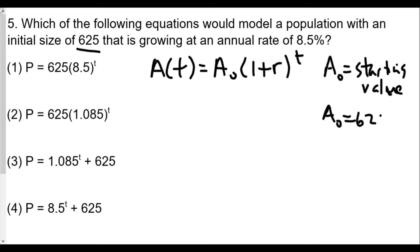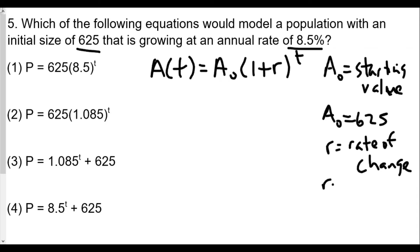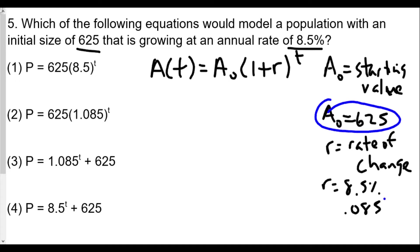Then r is the annual rate of change — increase or decrease. We see the rate of change is 8.5%, so r = 0.085 as a decimal. We'll now plug in a₀ and r into our formula.